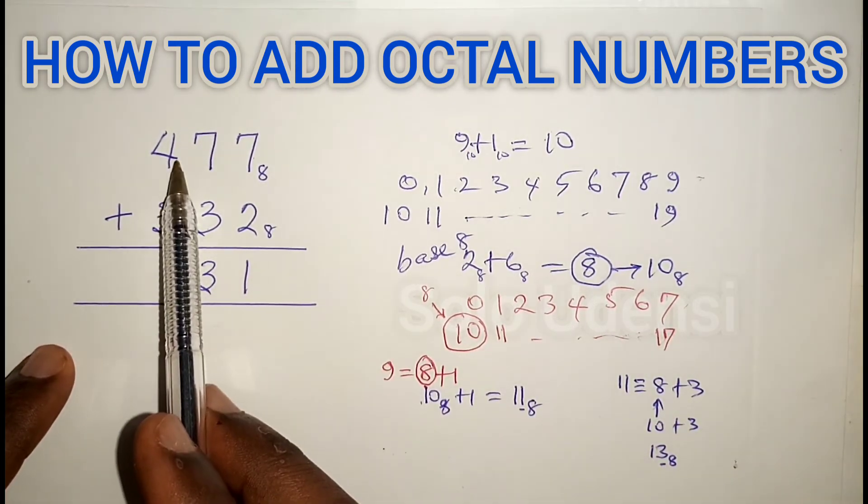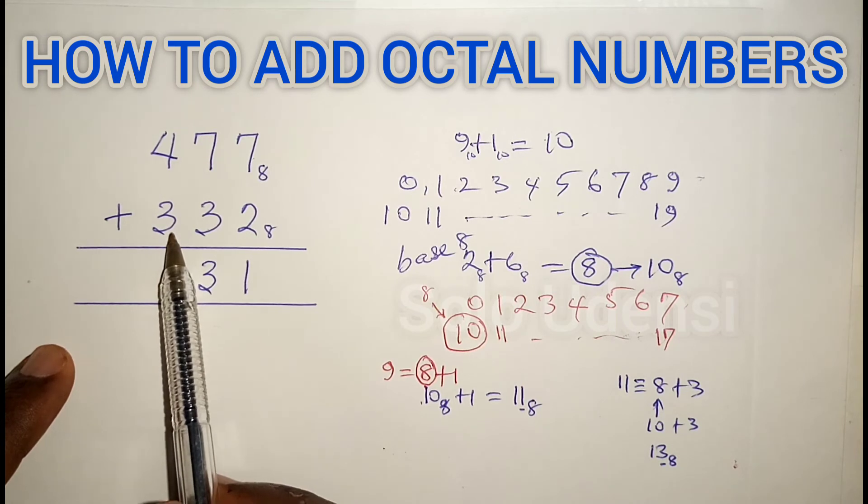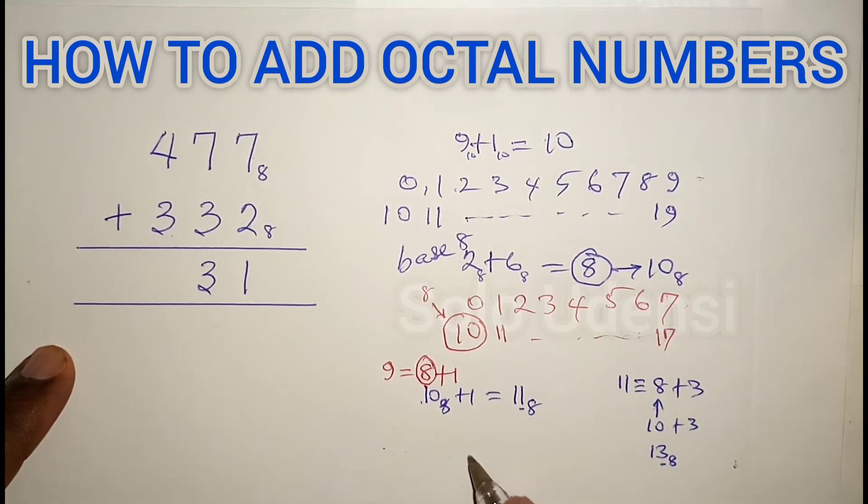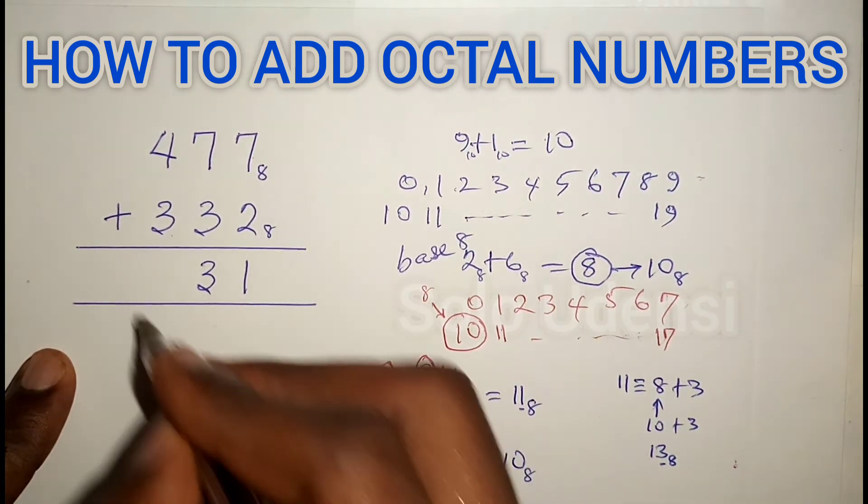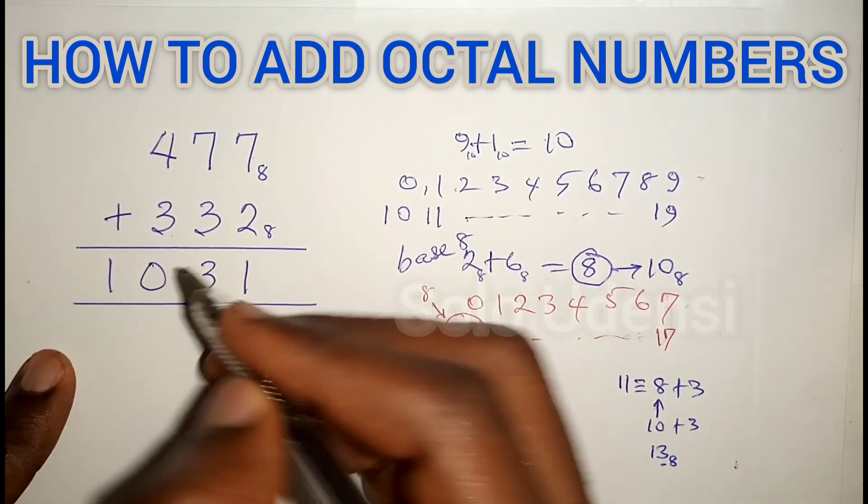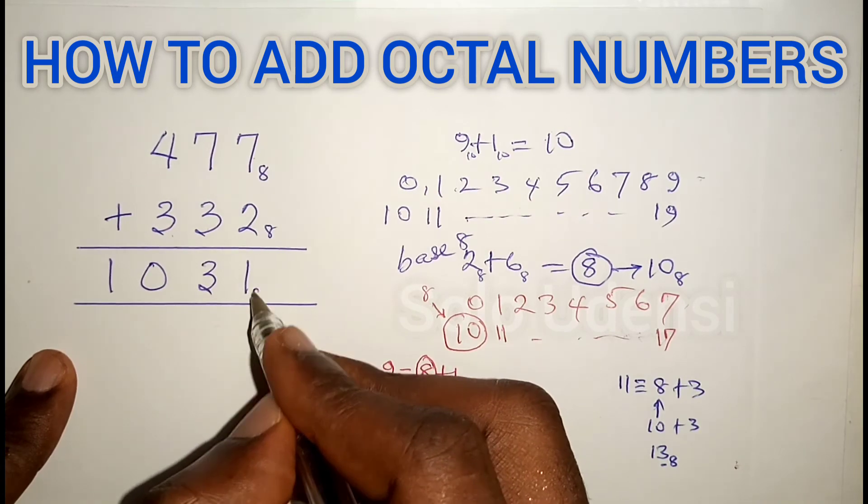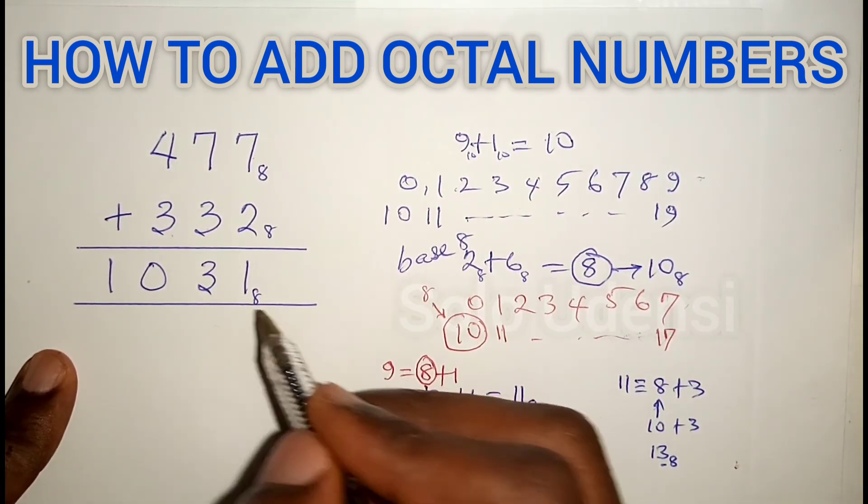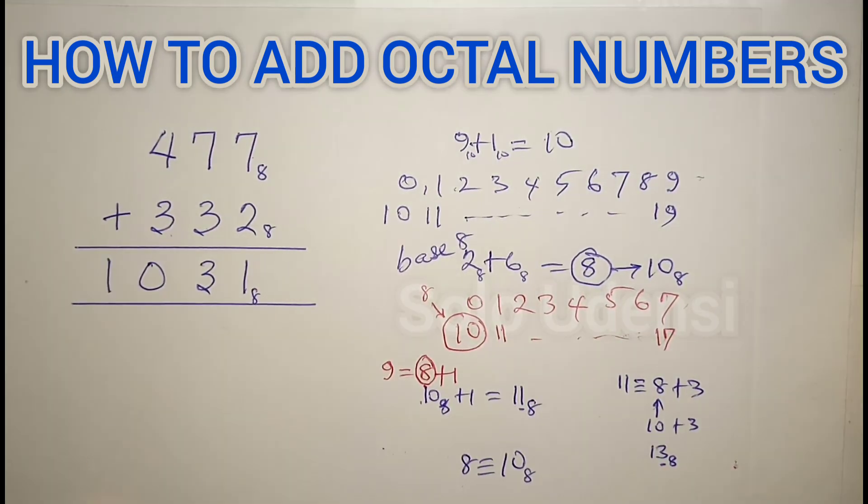Now 4 plus 3 plus the carried 1 is 8. Eight is equivalent to 10 in base 8, so write 10. The answer in base 8 is 1031 in base 8.